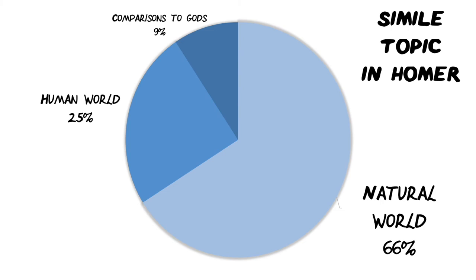What I used that article for was to look at the simile topics in Homer. I've just said that things the audience didn't understand are described in comparison with things they do understand. A whopping 66% of all the similes across the Odyssey and the Iliad are about the natural world — things that they would all hopefully have experienced. And 25% are about the human world, which is really interesting. We've also got a little 9% of comparisons to gods — it's not always hubristic to compare someone to a god, but it's certainly going to give a great big dramatic effect.